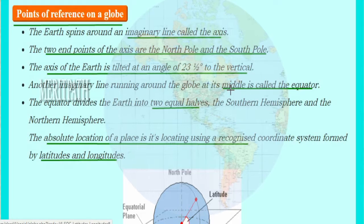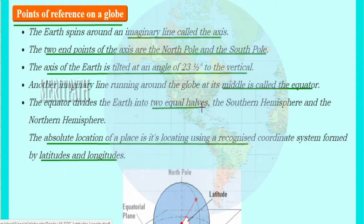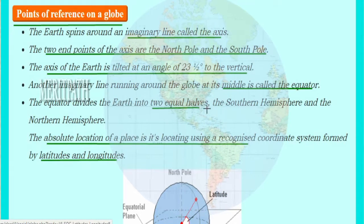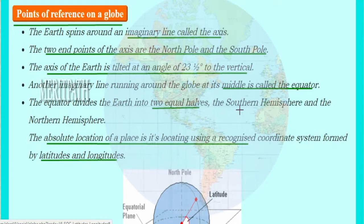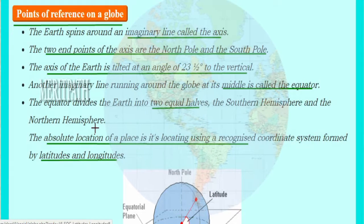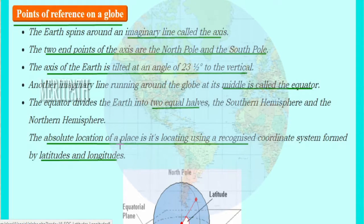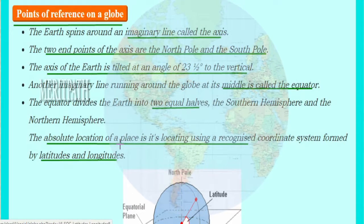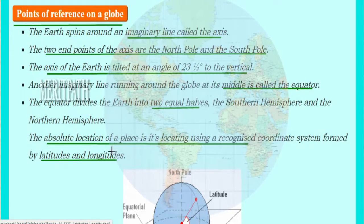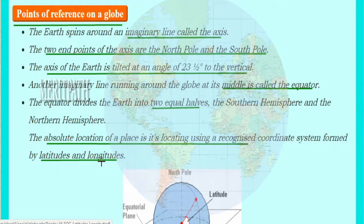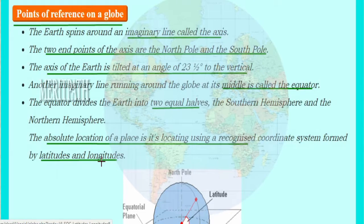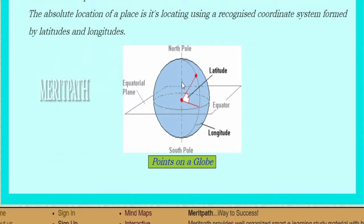Another imaginary line runs through the middle of the earth, known as the equator. The equator divides the earth into two equal halves: the Southern Hemisphere and the Northern Hemisphere. The absolute location of a place can be determined using a coordinate system formed by latitudes and longitudes.